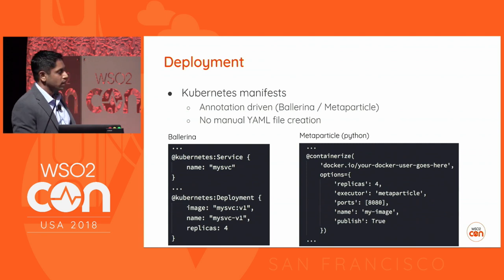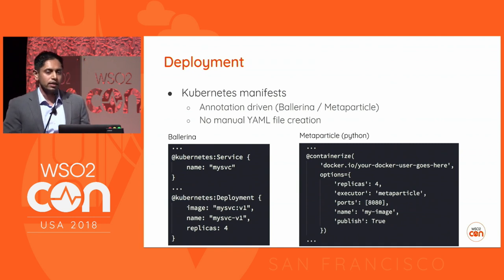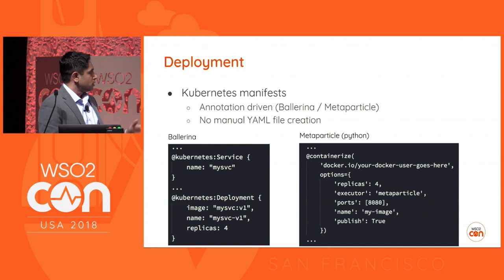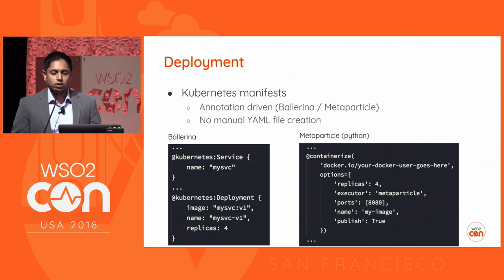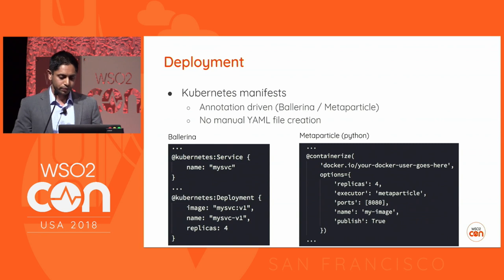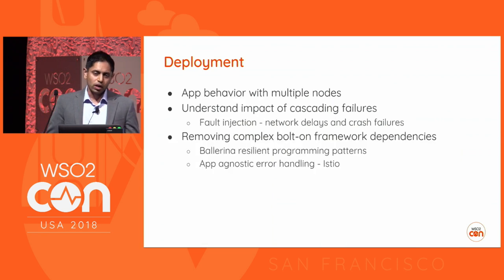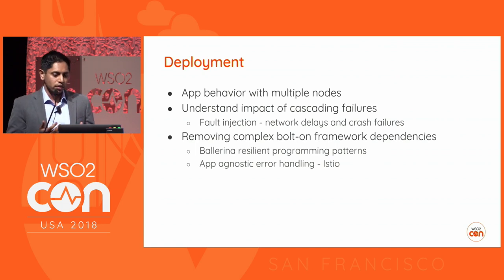There are technologies that allow you to create these YAML artifacts automatically. On the left is Ballerina — you'll probably learn more about this in depth tomorrow. And on the right side, it's a relatively new project called MetaParticle, which is also trying to give an annotation-driven approach to things like Java, Python, et cetera. So you don't have to deal with manual YAML file creation.